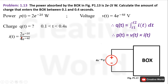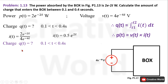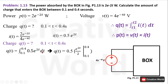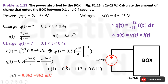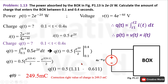Current equals power divided by voltage, which is 2e^(-2t) divided by 4e^(-40t), giving a current value of 0.5e^(2t). For the calculation of charge, we integrate the current from 0.1 to 0.4 seconds, solving the exponential integral and putting in the time values. We get the charge equal to 862 millicoloumb. If you have any query on the exponential mathematics, you may ask in the comment section.